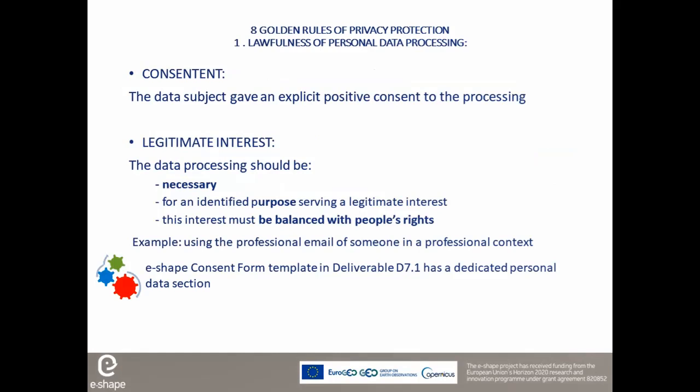The protections have eight golden rules. The first one is to have a lawful process. In order to be lawful, personal data should be processed on a legally defined basis. In e-shape, there are two main bases. The most important one is consent — the person gave an explicit positive consent to the processing, meaning they must have formally said or written yes to the processing.